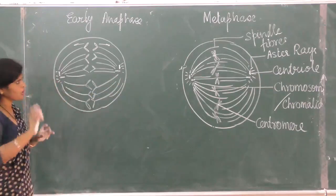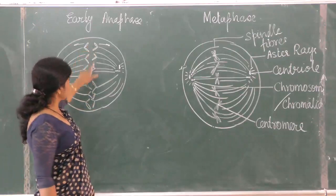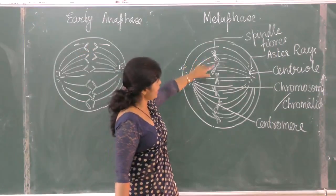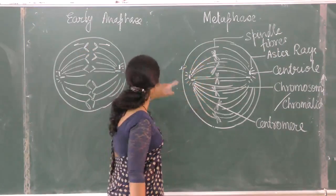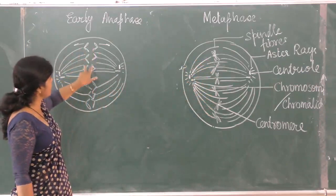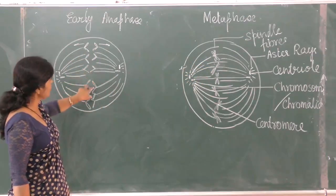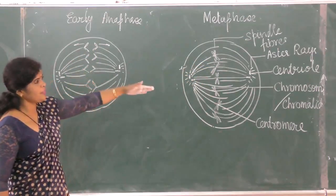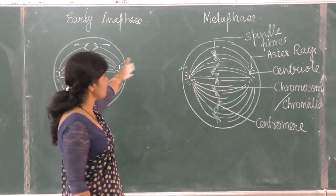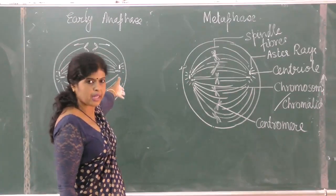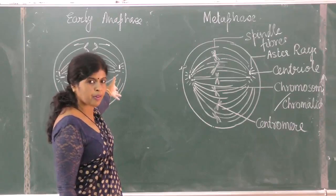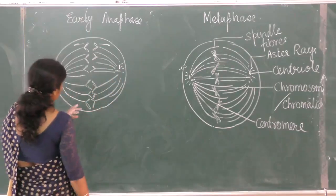One important thing to remember: the number of chromosomes must be maintained. If I started with six in metaphase, there should be six in anaphase as well. If you draw anaphase with five after showing metaphase with six, you will not get marks. Keep the chromosome number fixed.